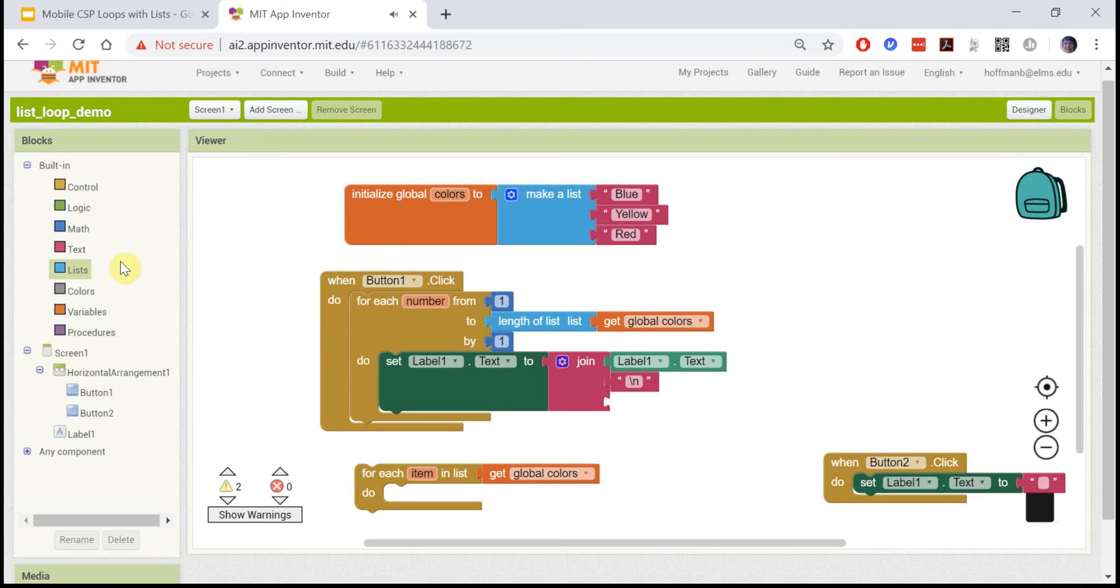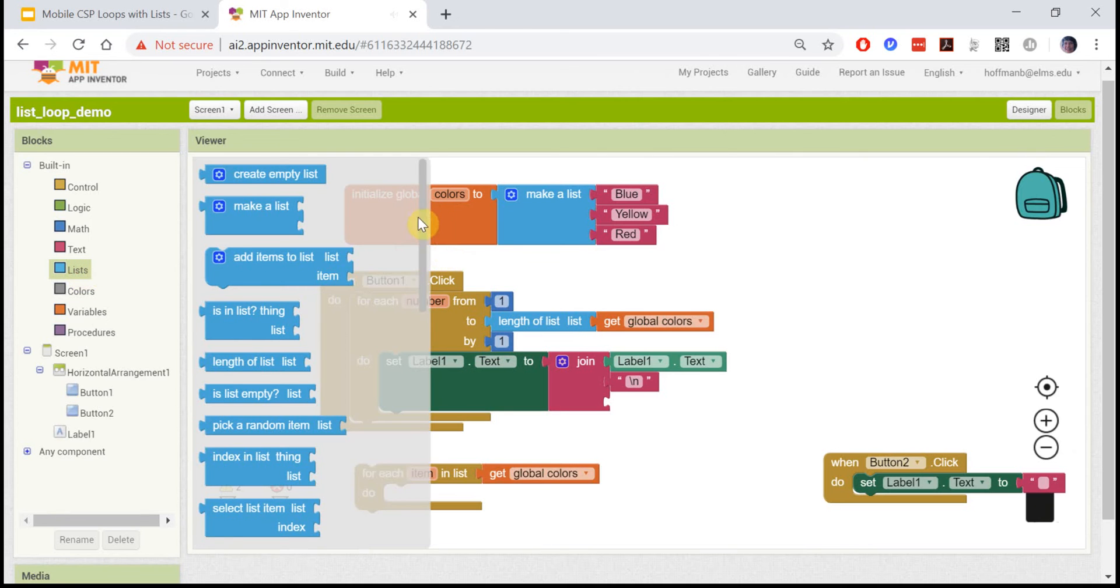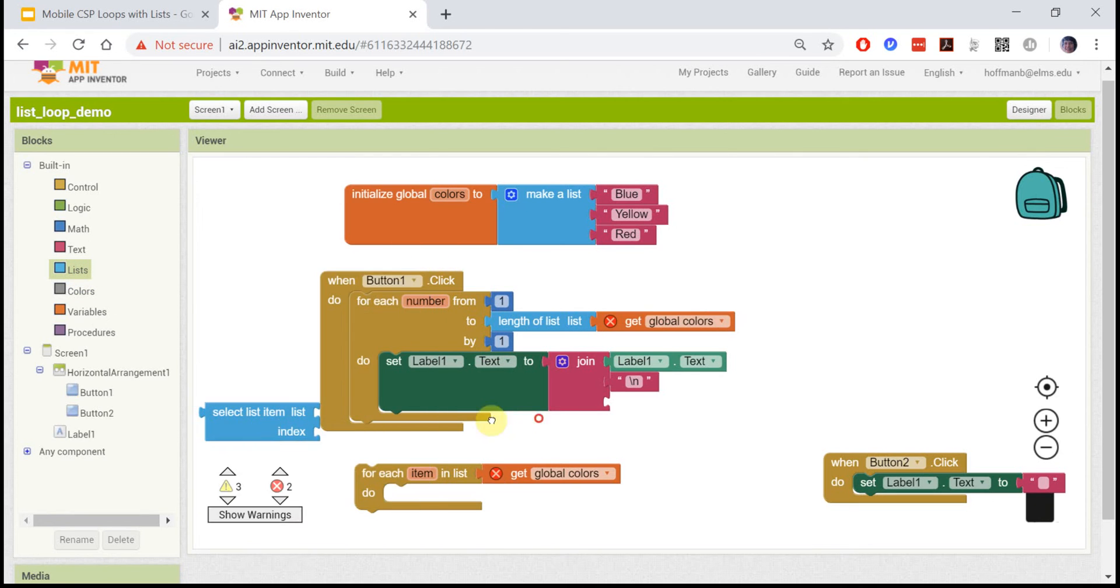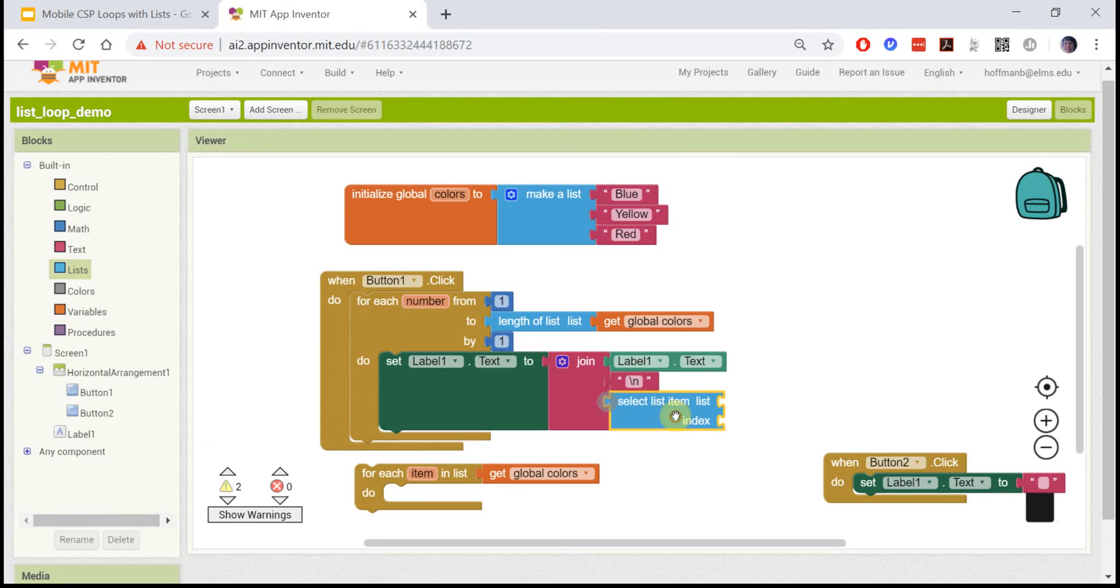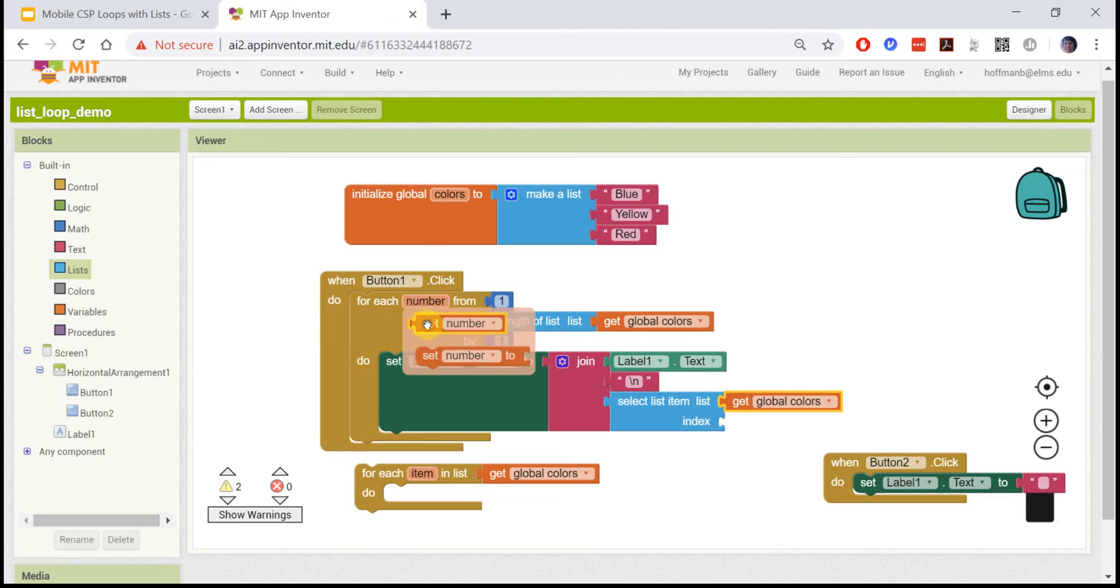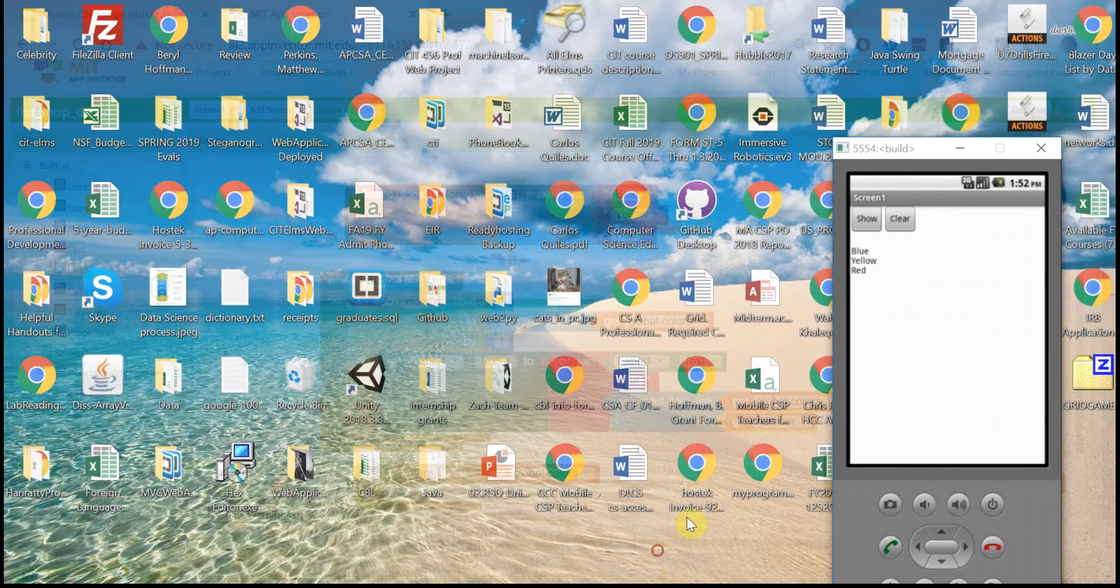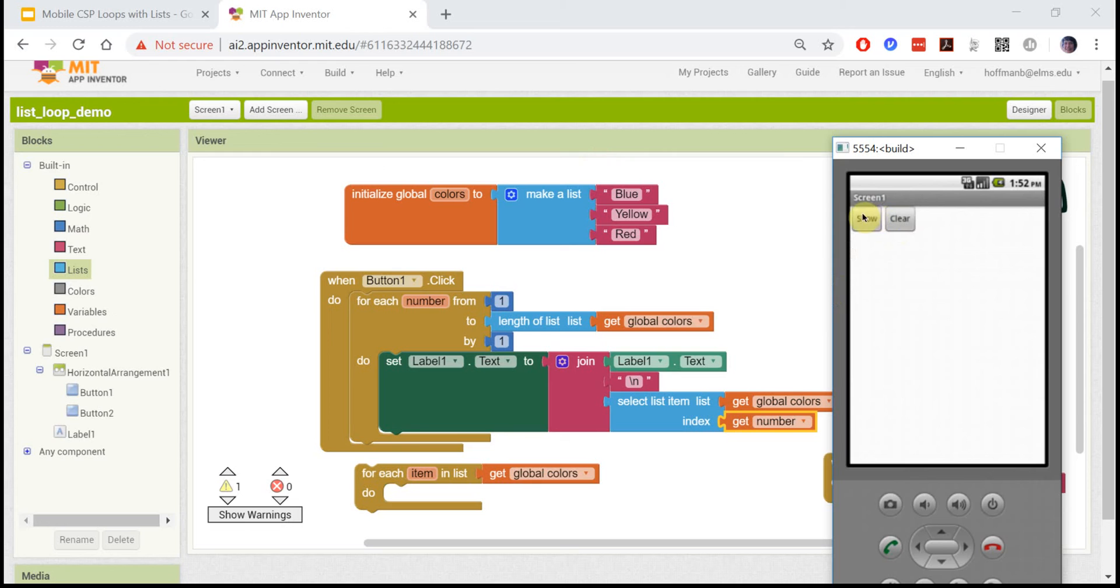We have to use this number. There is a select block - select list item - that will get us from the colored list the item at the numbered index. So whatever number is in the loop, the first time around this will be index one, next time index two, and then index three. If we run this loop, you'll see that it does exactly the same thing, but this time it's using the index.